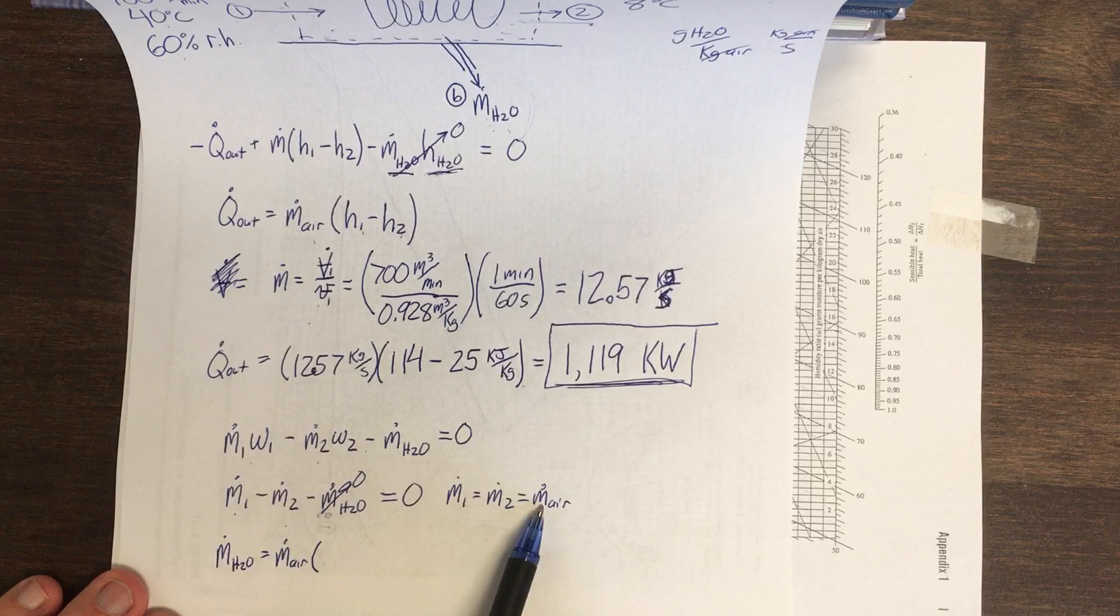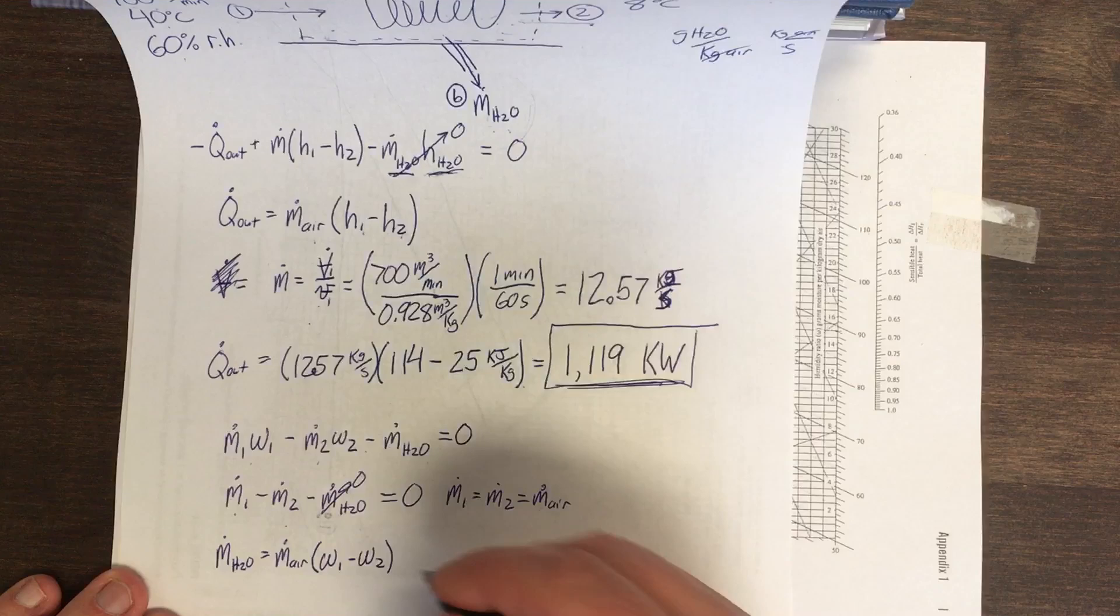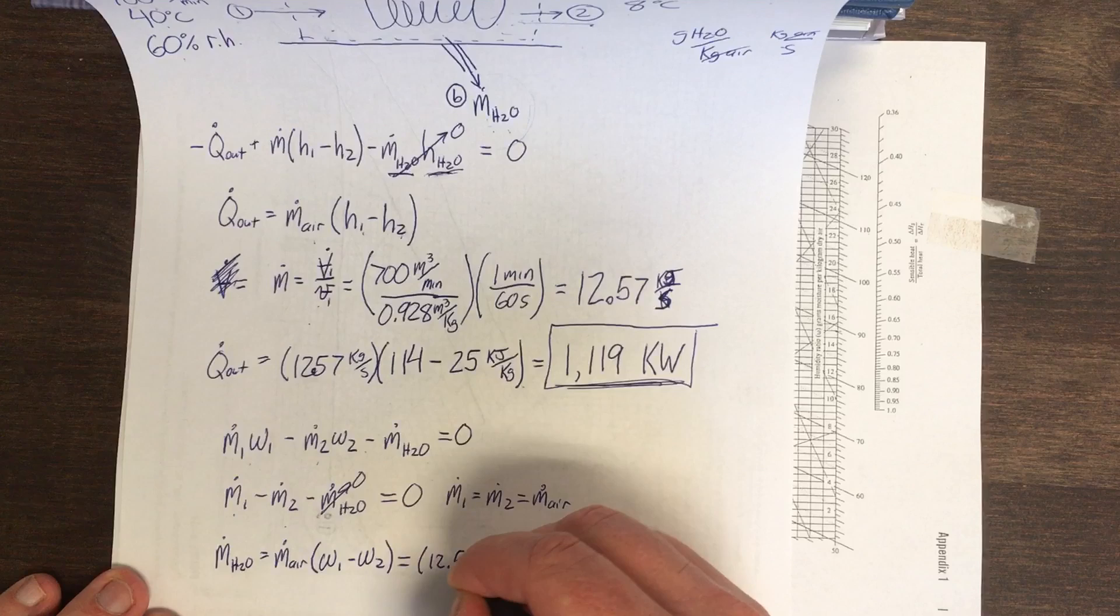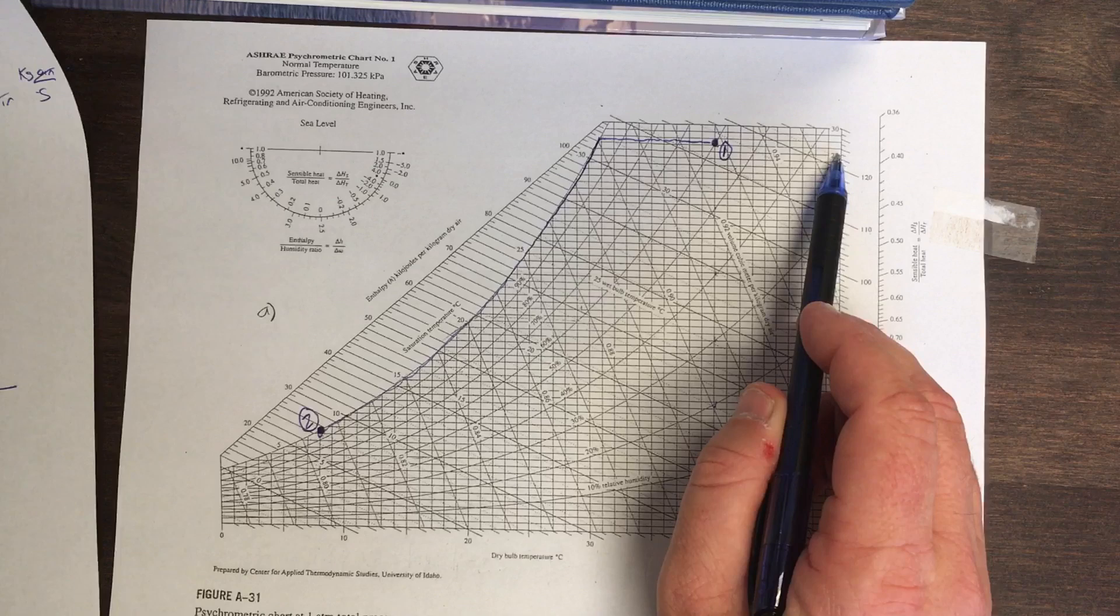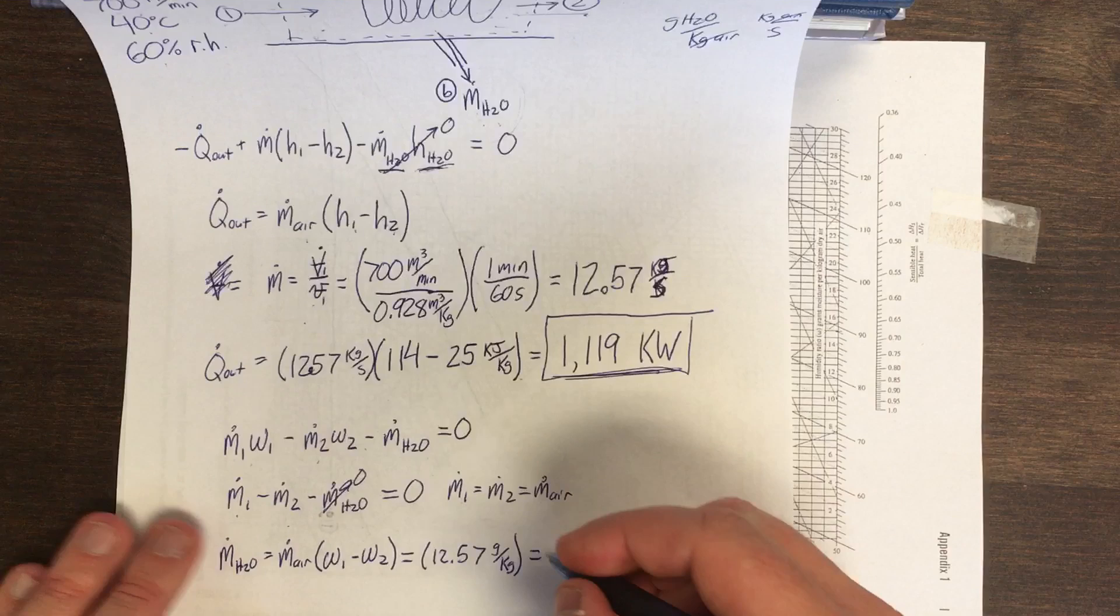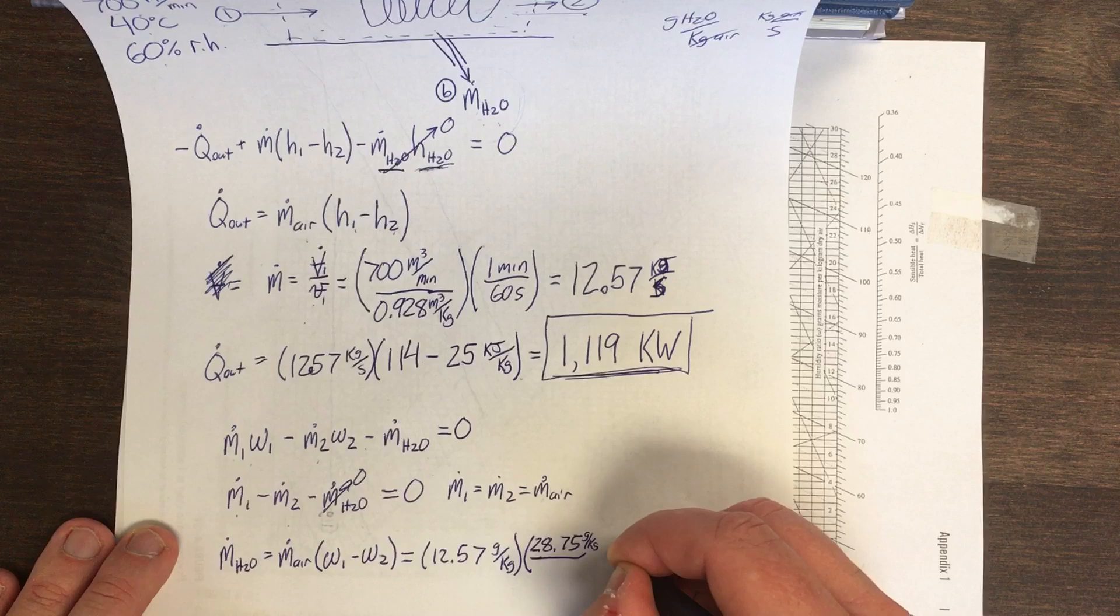If I factor, substitute mass flow rate of air into one and two, move that over there, I'm going to have humidity ratio one minus humidity ratio two. Flow rate of air, we already found it, 12.57 grams per kilogram. Humidity ratio one. So let's see, that's 28, that's 28 and a half. I'm going to call it 28.75 gram per kilogram. Minus humidity ratio two.